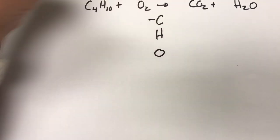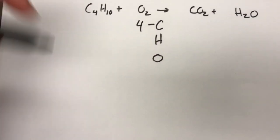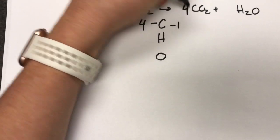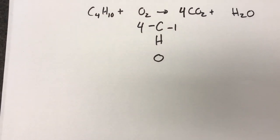On the left hand side for carbon we have 4 carbons. On the right hand side we only have 1. 4 divided by 1 is 4.